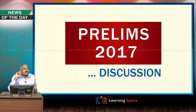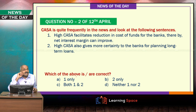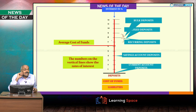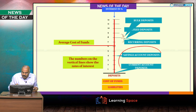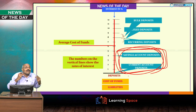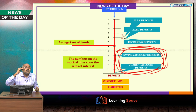Moving to the Prelims 2017 discussion. A student asked about high CASA and its relationship to cost of funds. High CASA means the percentage of savings account and current account deposits to total deposits is high. When this percentage increases, the interest paid by banks — the cost of funds — comes down automatically, because current accounts pay 0% interest and savings accounts pay around 4%, whereas fixed deposits may pay 7-8%.